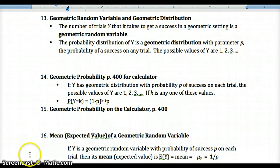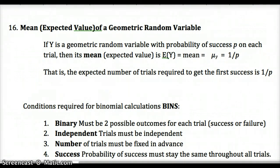If y is a geometric random variable, the expected value (mean) is 1/p — that is the expected number of trials to get the first success. For example, if the probability of success is 0.25, you'd expect to need 4 trials. Remember, conditions for binomial are BINS: binary outcomes, independent trials, fixed number of trials, and same probability of success throughout.